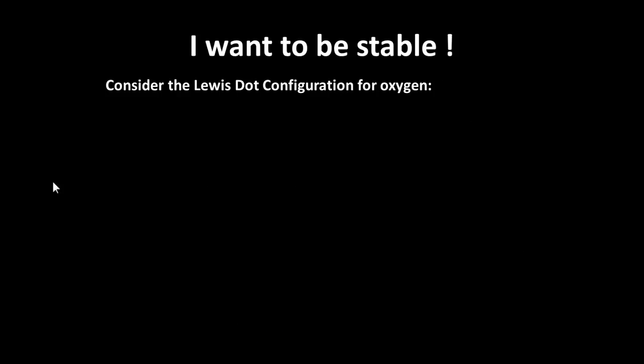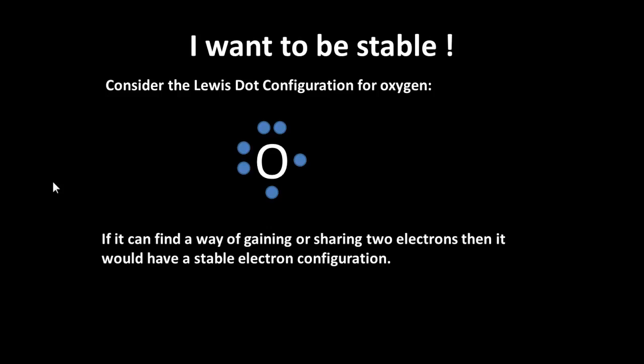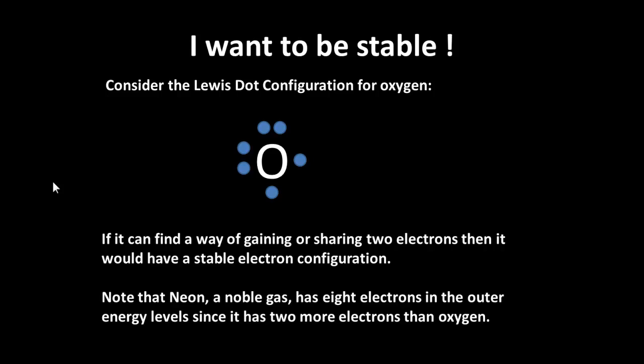So let's consider oxygen and look at the Lewis dot diagram for oxygen. We can see there are six electrons there in the valence shell. So if it can find a way of gaining or sharing two more electrons, then it would have a stable electron configuration. The electron configuration would be that of neon, the noble gas, which has got eight electrons in that outer shell.